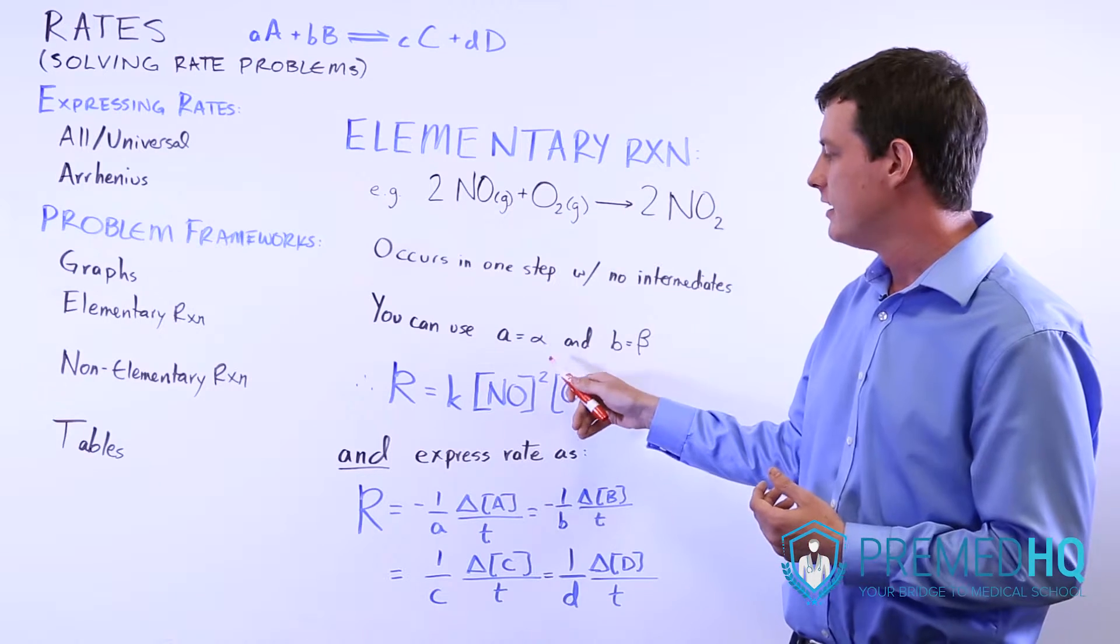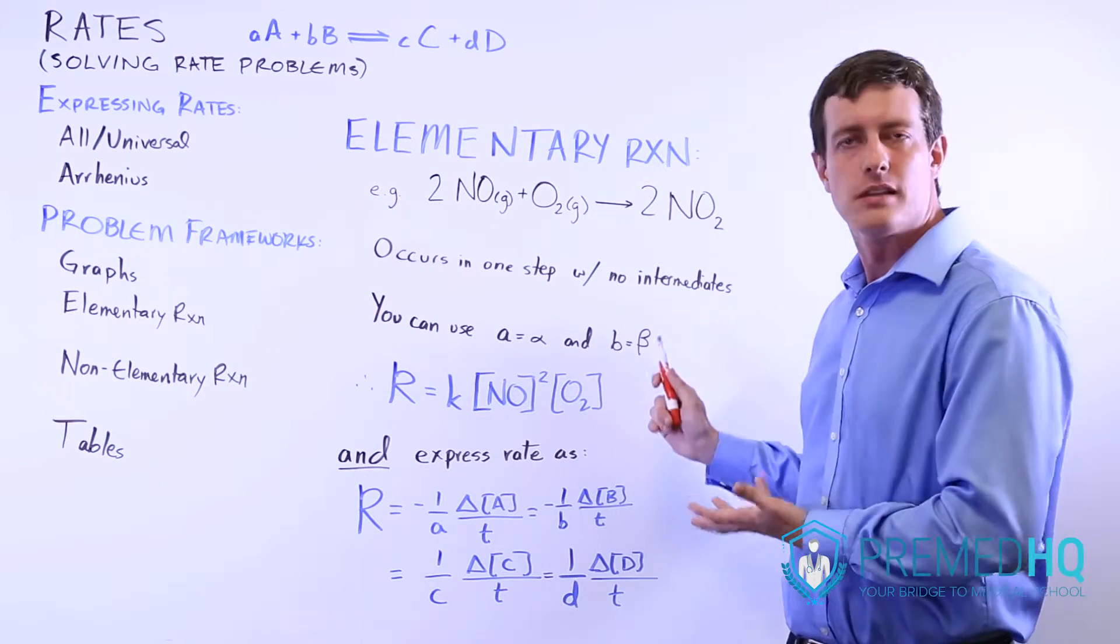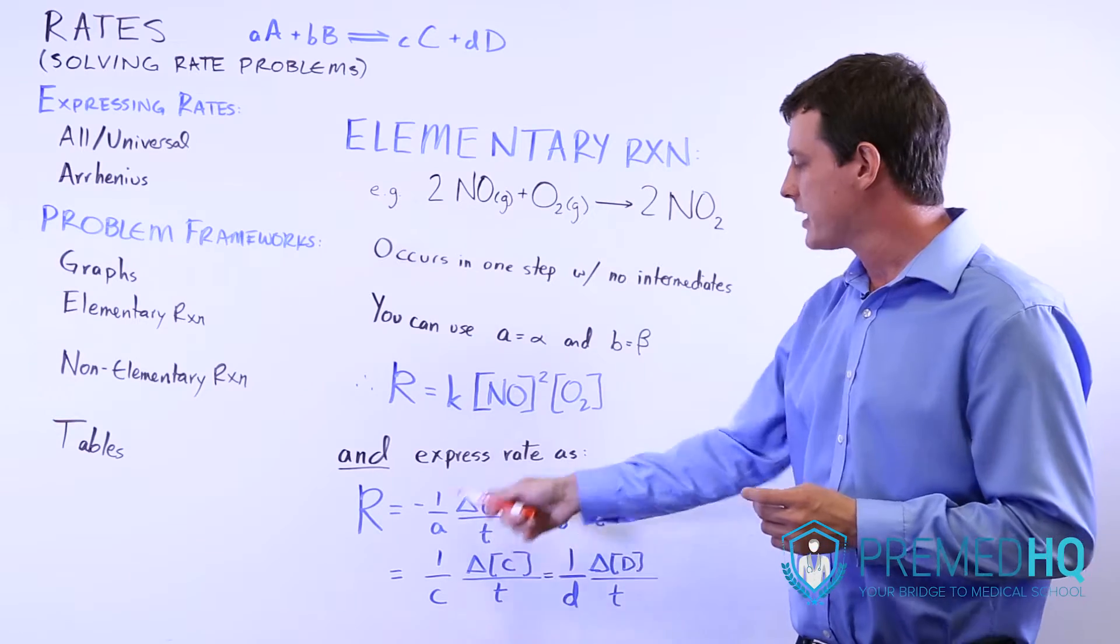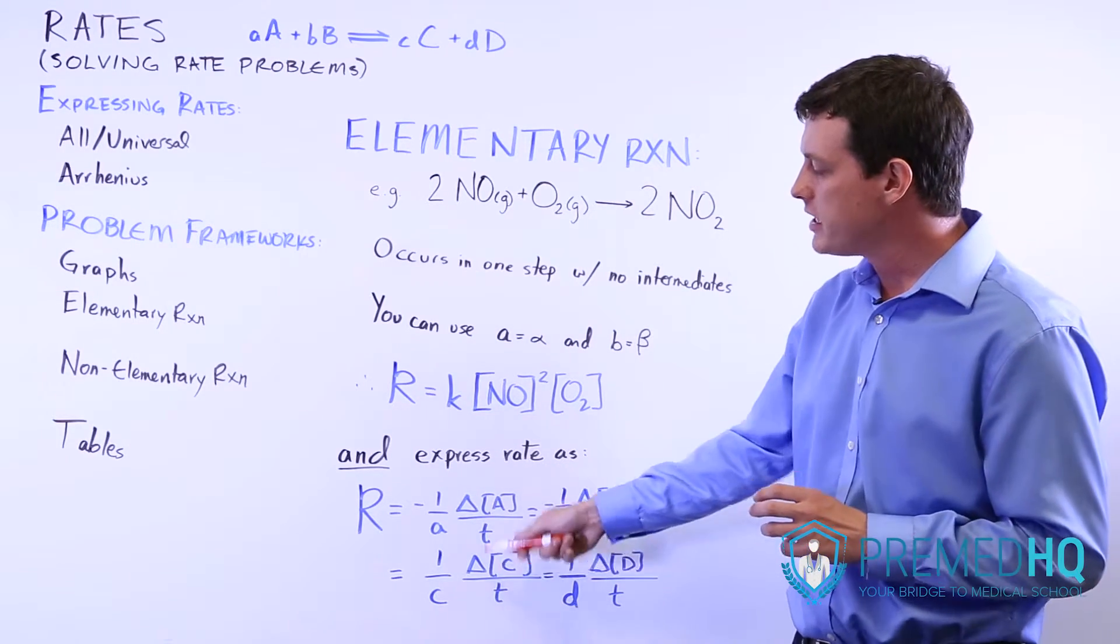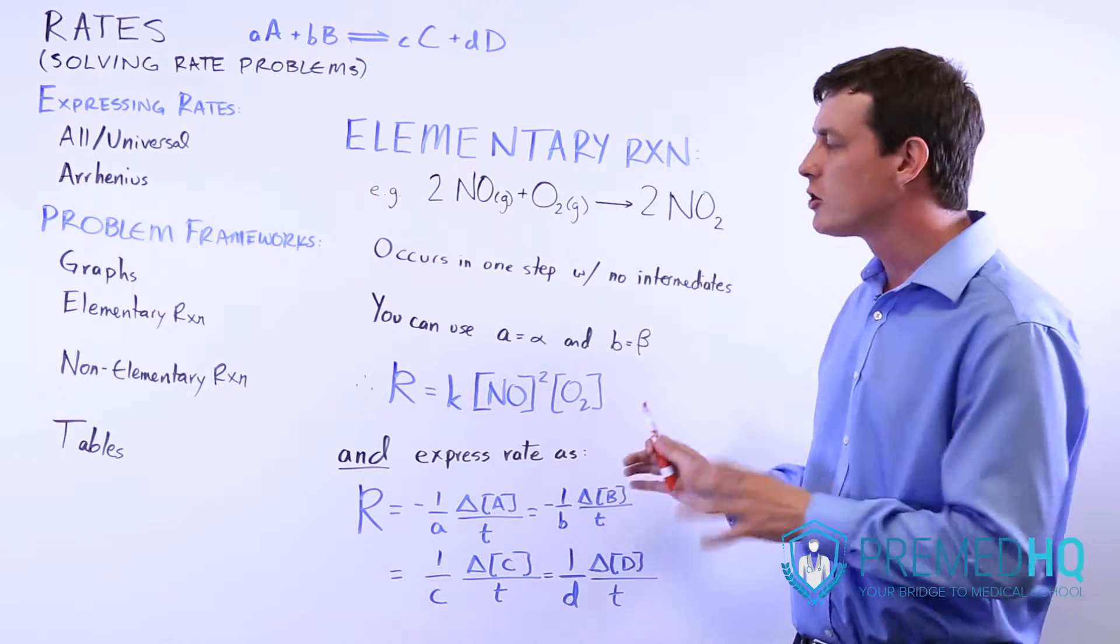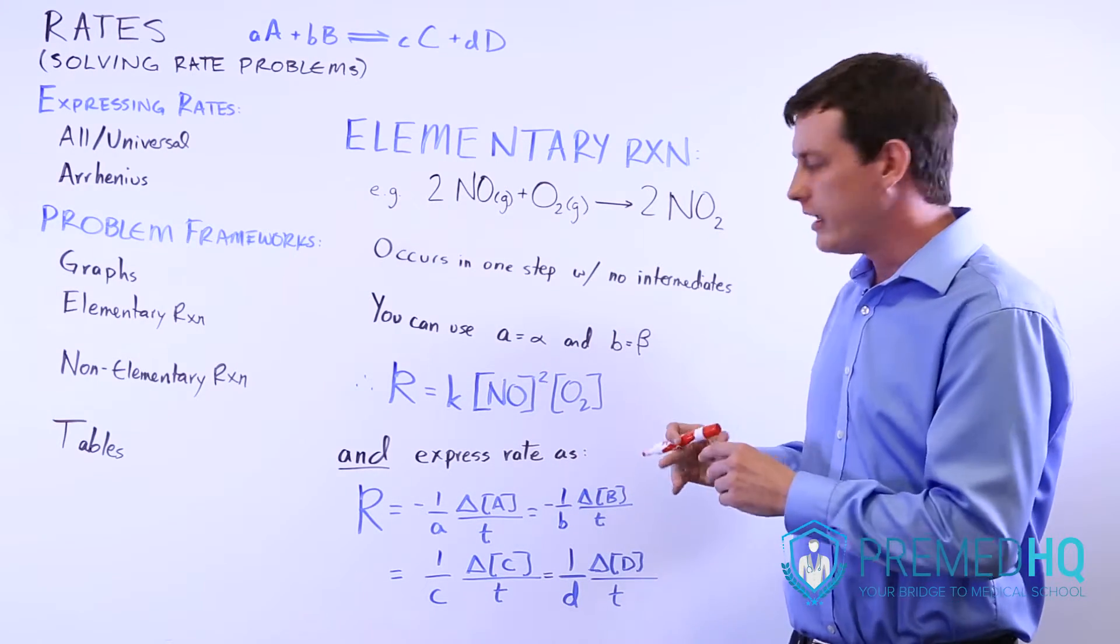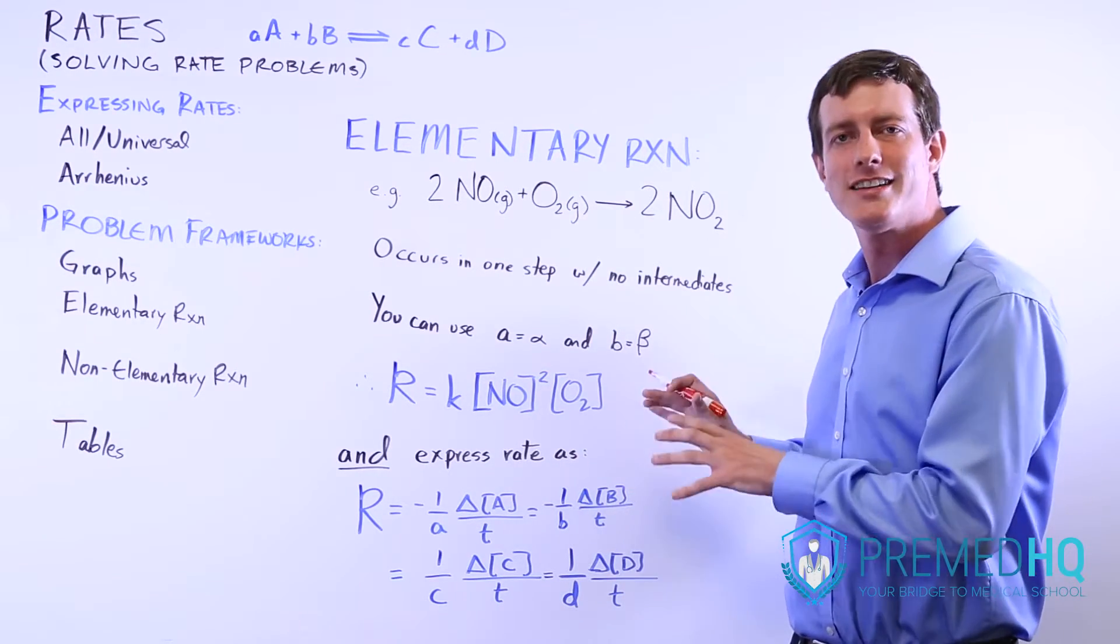K times A to the A and B to the B over time. Realize that because this is one way you can express the rate laws, this can be used in conjunction with other ways of expressing the rate laws in a more complicated high-level question.